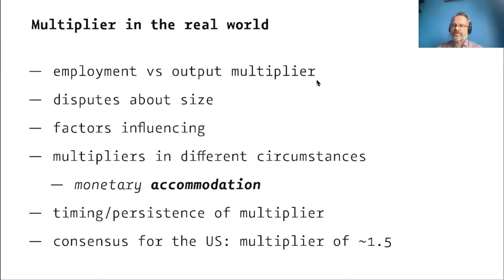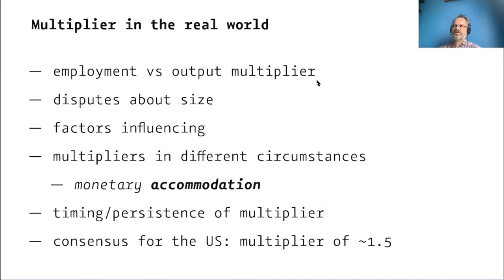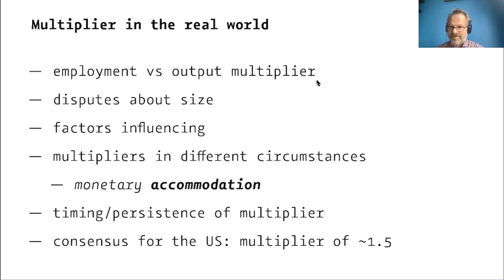With all these factors, in many conversations about the United States, assuming a reasonable degree of monetary accommodation, people tend to settle on a figure like 1.5. If you think the multiplier for the United States today is in the vicinity of 1.5, nobody is going to look at you like you're crazy — that's accepted as a reasonable number. We'll talk momentarily about how that number might look for other countries.